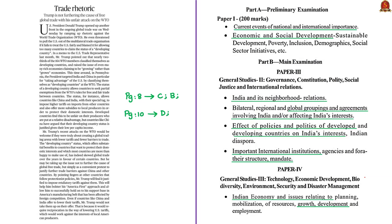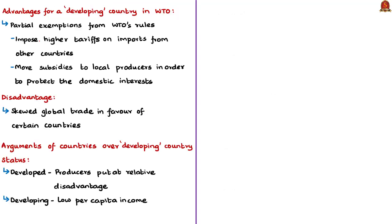Now let us see the news articles of 16th August 2019. Let us see the editorial named 'Trade Rhetoric.' In the previous news article, we saw that the United States president threatened to pull out of the WTO on the pretext that the US is being treated unfairly, and that too many countries claim developing country status. In this editorial, the author has mentioned some advantages and disadvantages for being a developing country in the WTO. Countries that claim themselves as developing countries enjoy certain partial exemptions from WTO rules — they can impose higher tariffs on imports and give more subsidies to local producers to protect domestic interests.